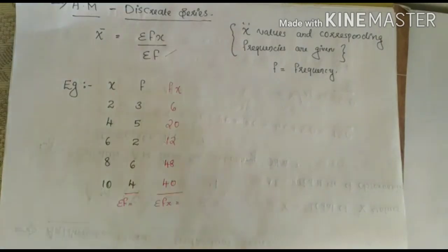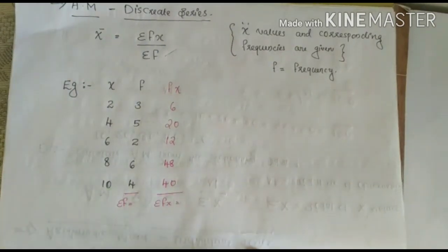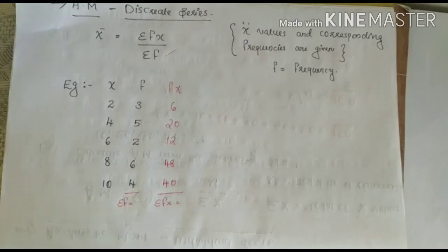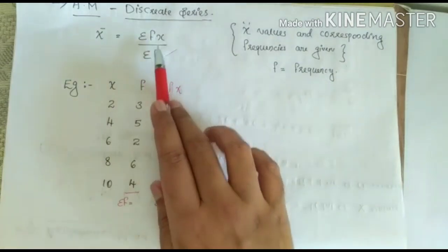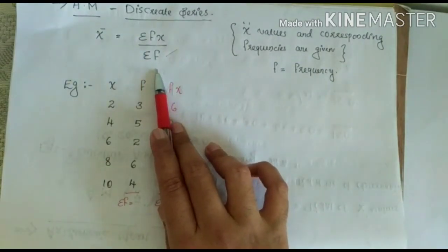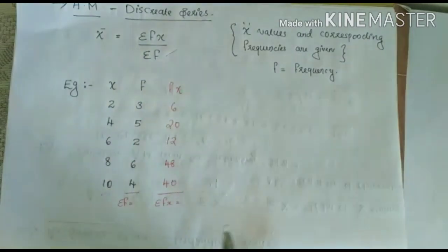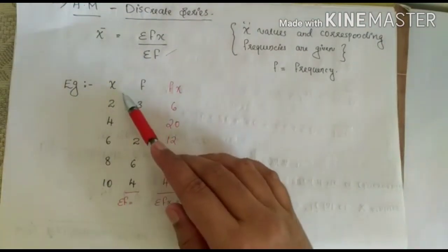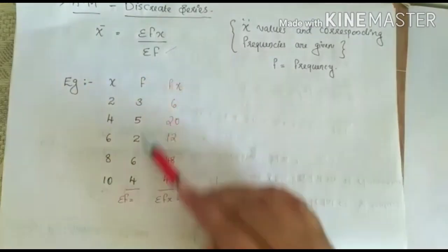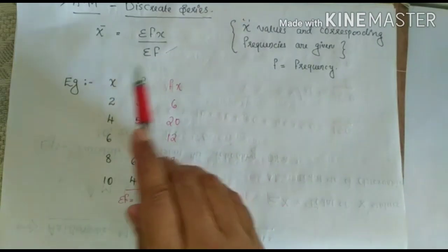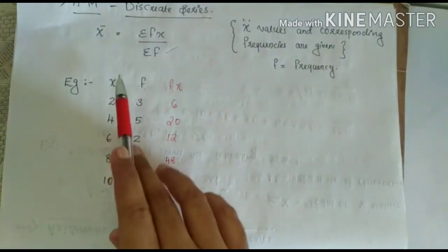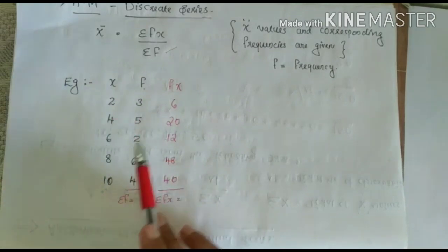We are moving on to the next topic: how to calculate arithmetic mean in discrete series. In the case of discrete series, the values of X and corresponding frequencies are given. The following equation is used to find arithmetic mean in discrete series: sigma FX divided by sigma F. Sigma F is the total of the frequency. The values of X and F are given, and you have to calculate FX by multiplying X into frequency.